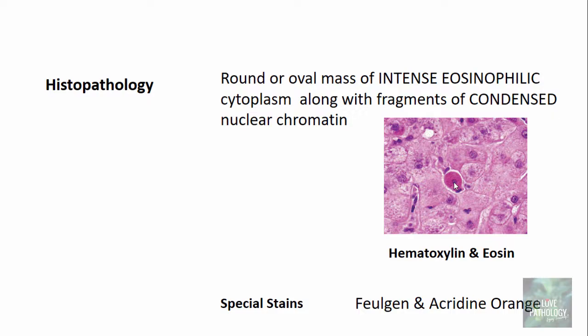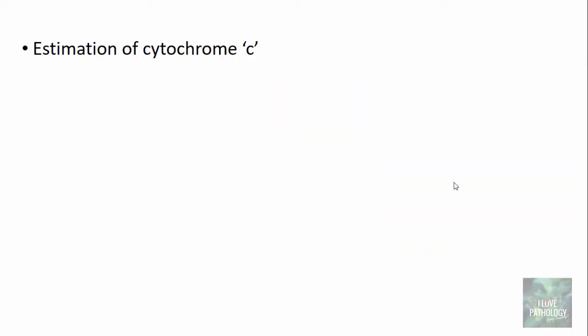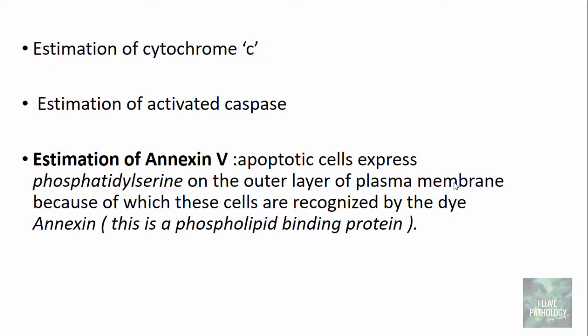There are other investigations where you can diagnose apoptosis: you can estimate the levels of cytochrome C, you can do estimation of activated caspases, and estimation of annexin-5. In the last class we studied that once apoptotic bodies are formed, the phosphatidylserine which was normally on the inner side of the plasma membrane is now expressed outside.